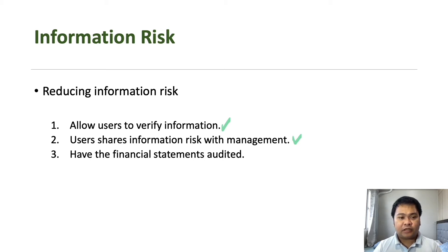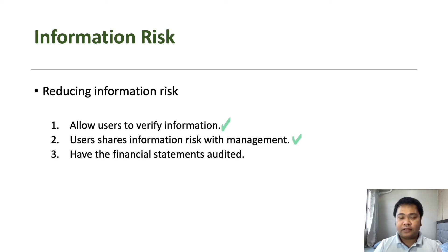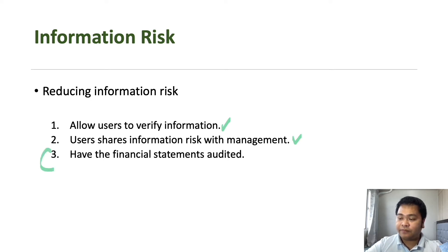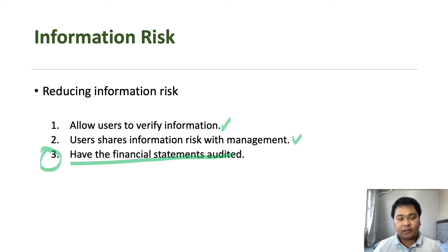However, the problem with lawsuits is that they are very expensive, and not all users will be willing or cooperative in filing a lawsuit against management. That is why the most efficient, effective, common, and even cheapest way to reduce information risk is to have the financial statements audited — which makes the case for auditors to be hired by companies to validate the information in their financial statements.